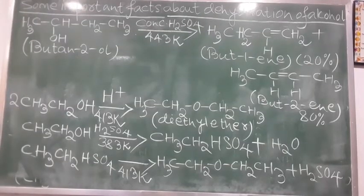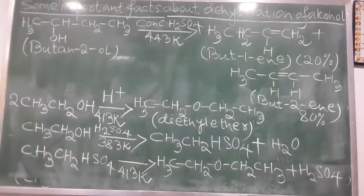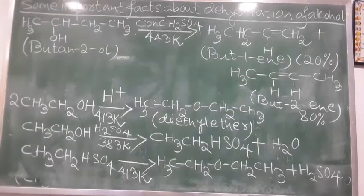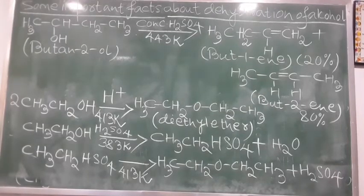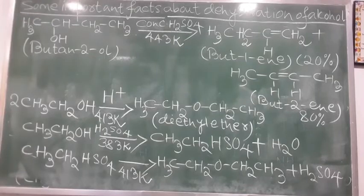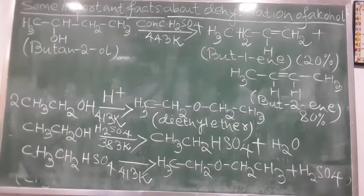Now I am going to discuss some important facts about dehydration of alcohols. Please note: the acidic dehydration of alcohols to alkenes occurs through the formation of an intermediate carbocation, and the stability of carbocation follows the order: tertiary > secondary > primary. Therefore, the relative ease of dehydration of alcohols follows the same order: tertiary alcohol > secondary alcohol > primary alcohol. The dehydration of secondary and tertiary alcohols always occurs in accordance with Zaitsev's rule, according to which the more highly substituted alkene is always the major product.